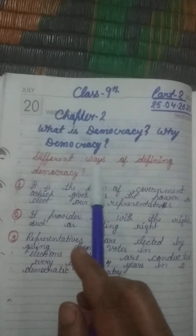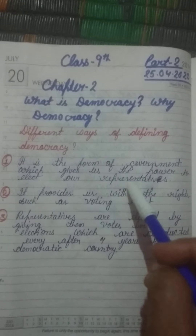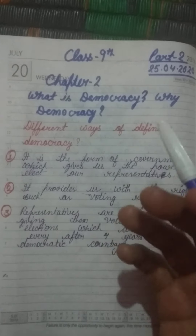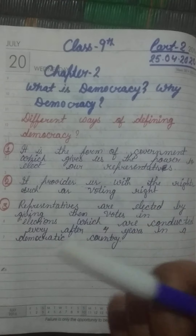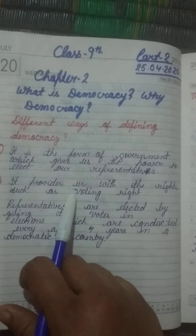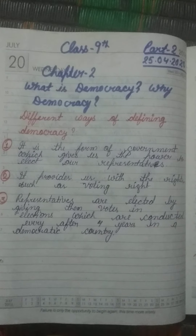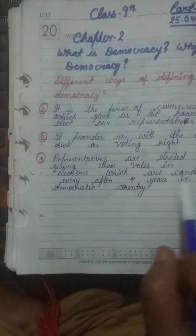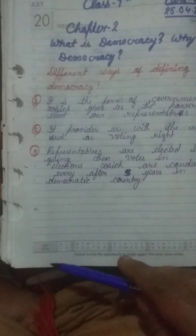First, we discuss different ways of defining democracy. One way to define it: democracy is the form of government which gives us the power to elect our representatives. It provides us with rights such as voting rights. The representatives are elected by giving them votes in elections conducted every four to five years in a democratic country.